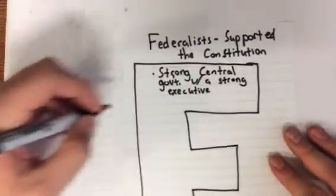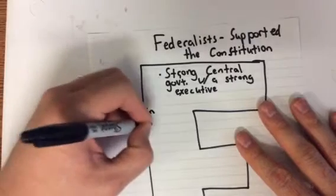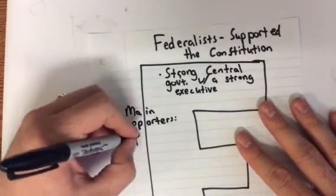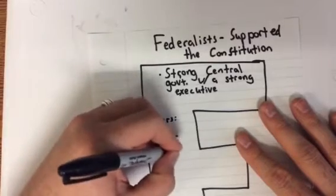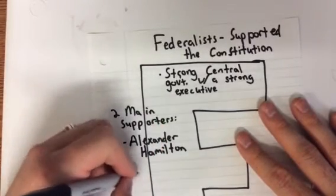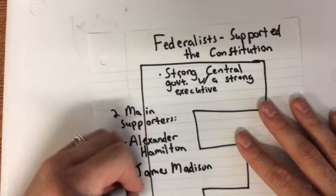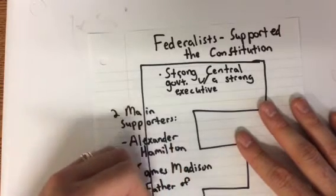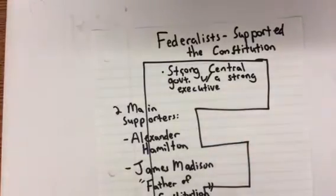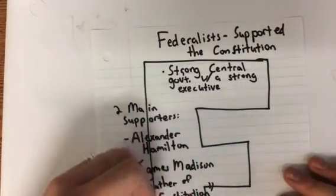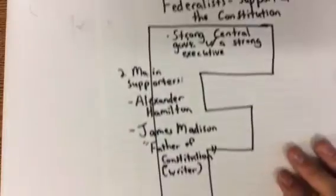There are two main supporters. We have Alexander Hamilton and James Madison. James Madison is the father of the Constitution — he is the one that wrote the Constitution, just so you know what that meant.